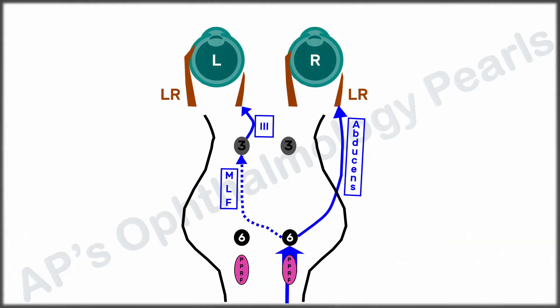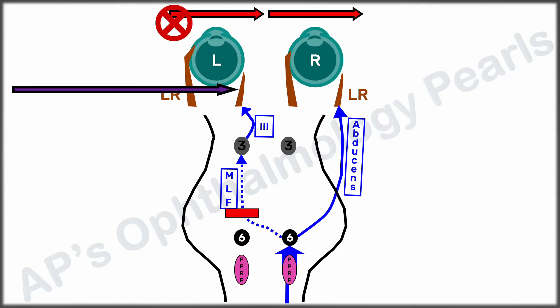If this horizontal gaze pathway is interrupted by a lesion in the left medial longitudinal fasciculus, the ipsilateral medial rectus cannot act on contralateral gaze, thus producing an adduction deficit.